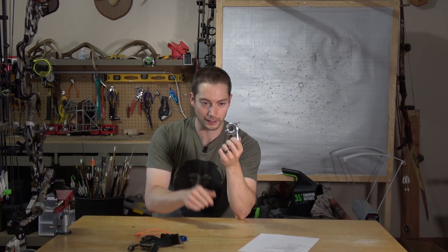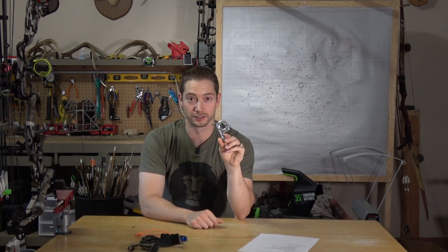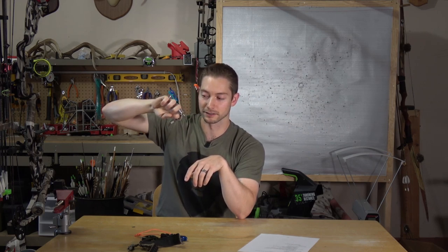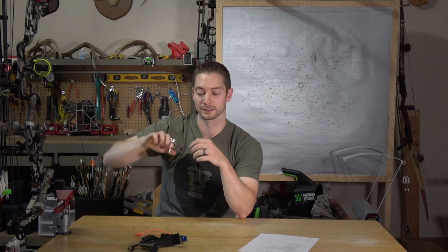And at some point, I can't remember exactly when, I had bought a Silverback, which is a tension activator release. It's got a safety on it. You get to full draw, take your thumb off the safety, and then you just basically expand until that release fires off of a certain amount of tension.